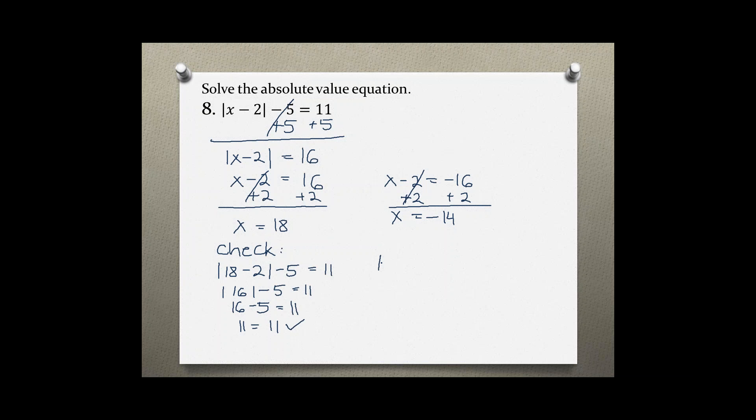Negative 14 minus 2 is negative 16. Taking the absolute value of negative 16 we get positive 16, and 16 minus 5 equals 11 which equals 11. So another true statement, which means both of these solutions check out.